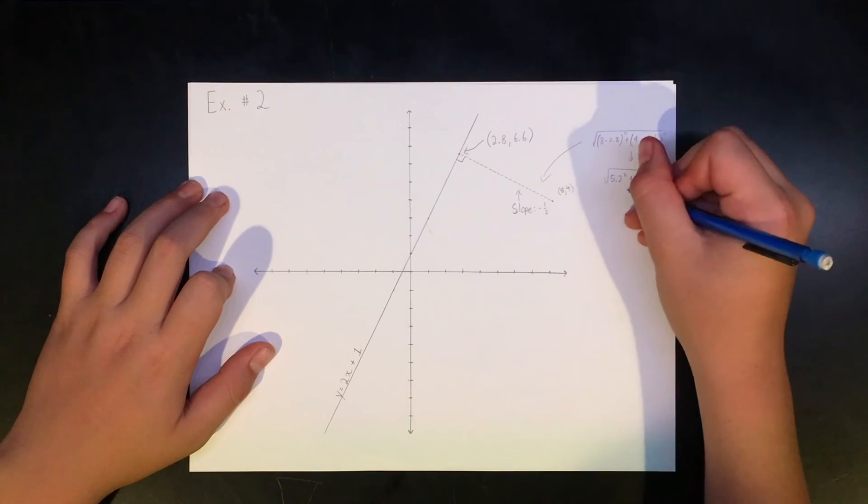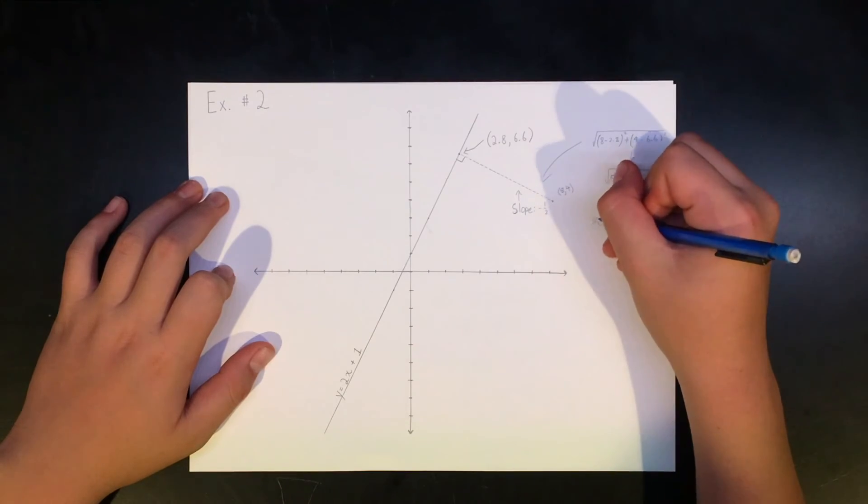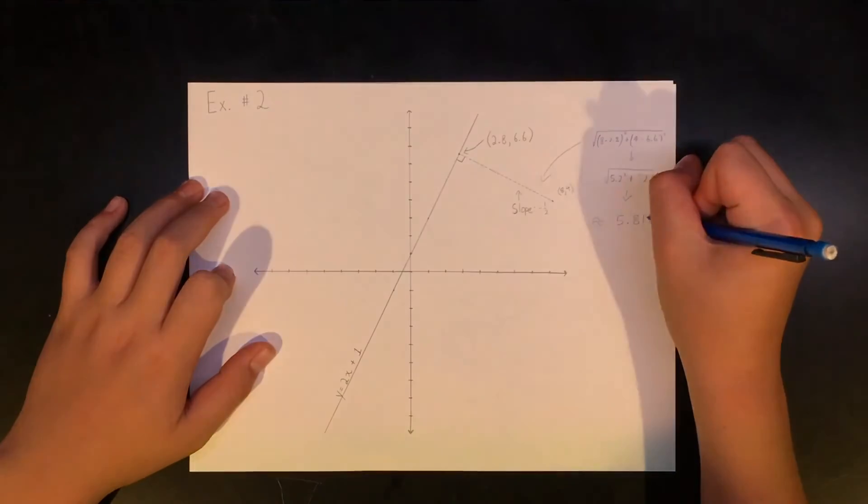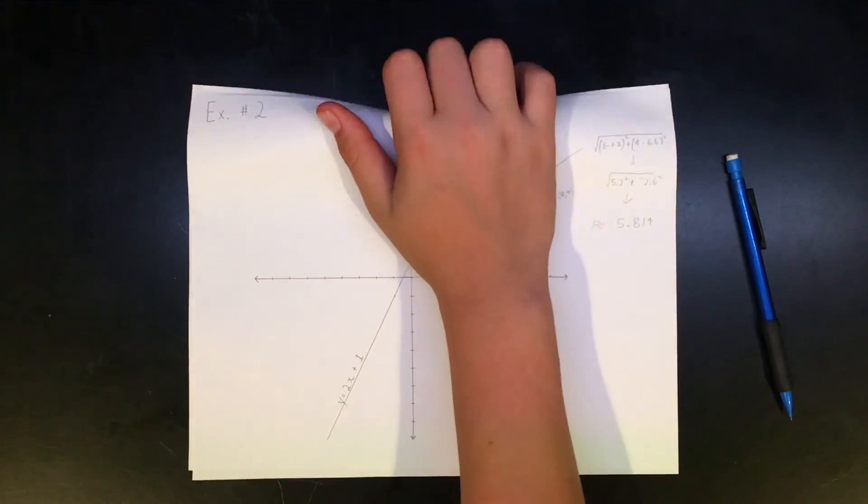The equation looks like this. D equals the square root of negative 5.2 squared plus 2.6 squared. The answer for the shortest distance from the point to the line is about 5.814.